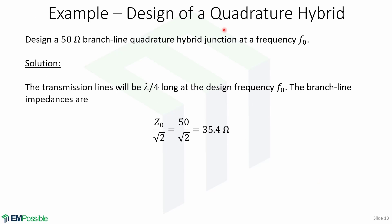To finish, here is a quick design example: design a 50-ohm branch-line quadrature hybrid junction at a frequency F0. Since we already know the design and behavior of the quadrature hybrid, this is straightforward. The transmission lines will be a quarter-wavelength long at the design frequency F0, and the branch-line impedances are given by Z0 over square root of 2, which equals 35.4 ohms.